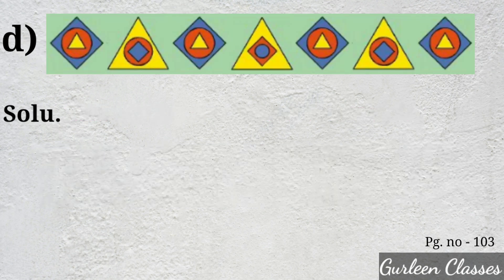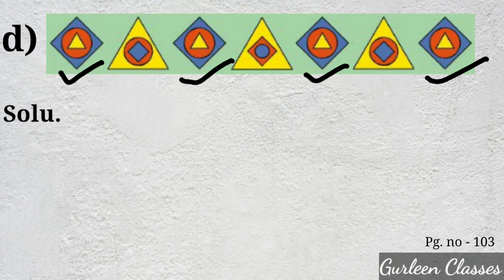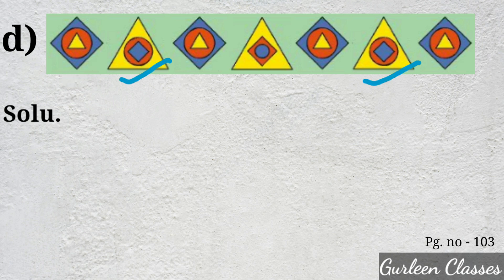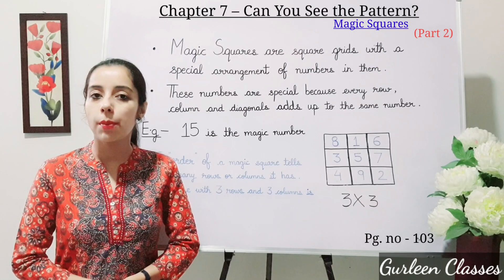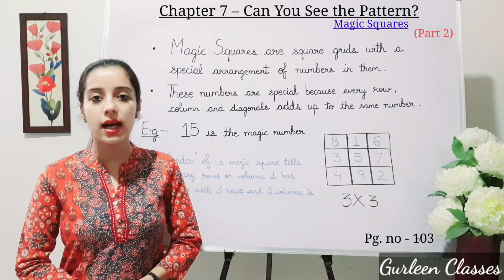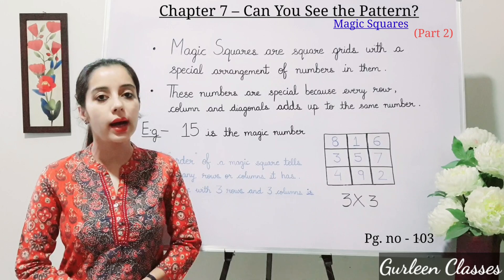Part D. Here you can see the shapes drawn. Just observe: the first, third, fifth, and seventh shapes are similar. The second and sixth shapes are similar. And the middle one, the fourth shape, is different. The correct answer has been marked. This topic is from your Maths NCRT book, page number 103.